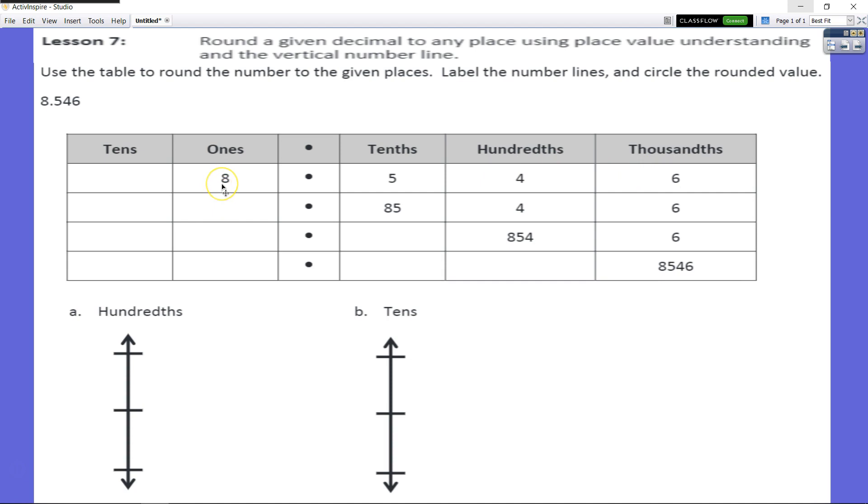Then what we did was we simply rename these eight ones as 80 tenths plus the five tenths we already had. So if you think about it, think about it like money. If you had eight dollars, you can take those eight dollars and get 80 dimes and still have the same amount of money. If you had eight dollars and five dimes, you would then have 85 dimes. So our tenths represents the dimes here.